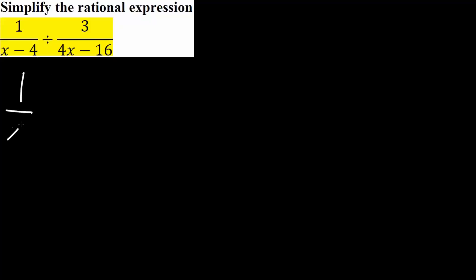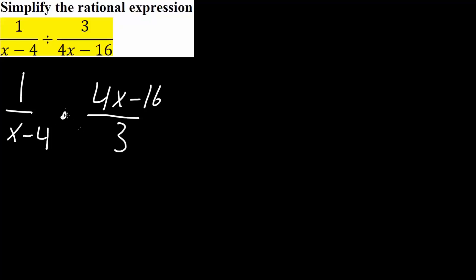What we're going to want to do here is instead of dividing we're going to want to multiply. So we will say 1 divided by x minus 4 times — division — we flip this. So instead of 3 divided by 4x minus 16, we say 4x minus 16 divided by 3. If we flip this part, we would have to multiply. The next step is to try to factor this term and try to cancel out any terms.